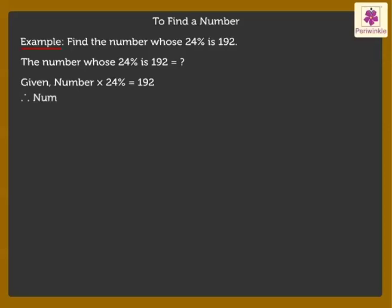We are given that the number is multiplied by 24% to get 192. Therefore, to get the number, we shall do the opposite, that is, divide 192 by 24%.